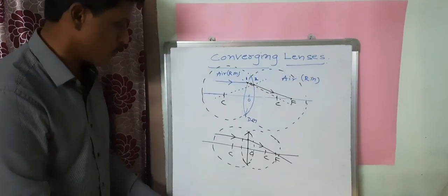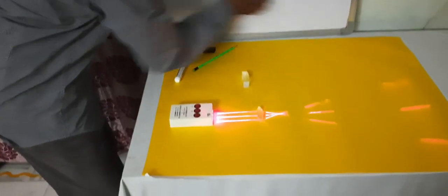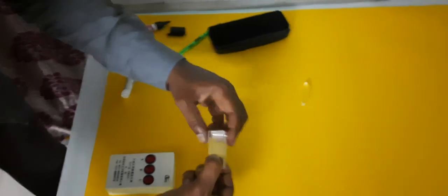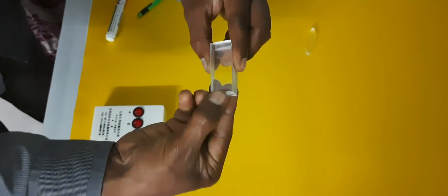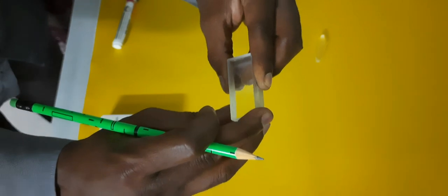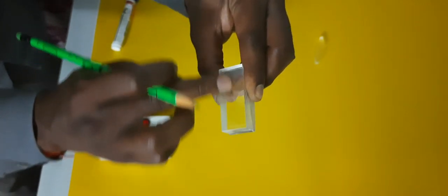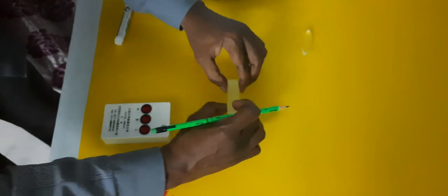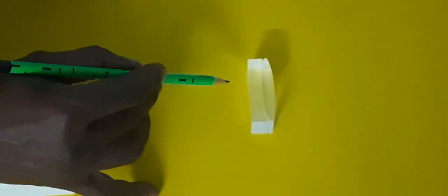Now let us see one more lens. If you observe this lens, it has two surfaces. This surface is plane — no curvature, no bending — so it is named as a plane surface and its radius of curvature is infinite. If you observe the other side, it is curved outward, so it is a convex surface. This lens has one plane surface and one convex surface, so it is called a plano-convex lens.